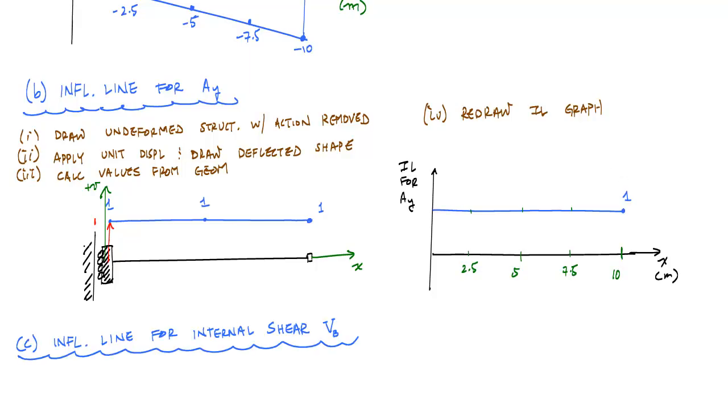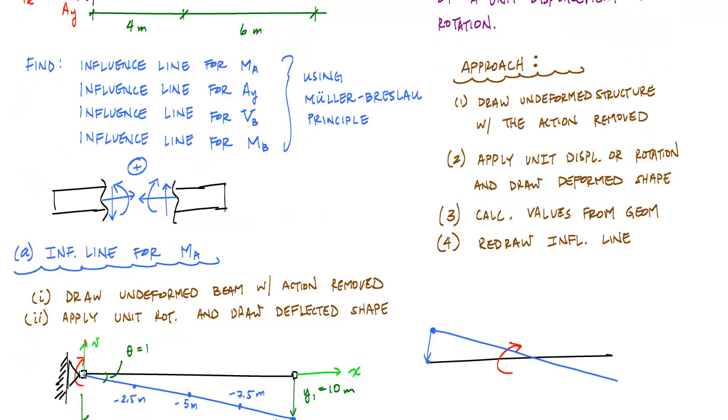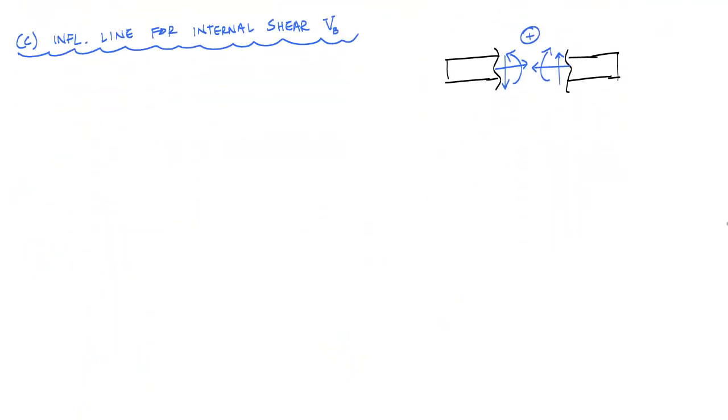So next, let's draw the influence line for the internal shear VB. And this is where this positive sign convention thing is going to come into play here. So I'm going to follow the same process as I did before. I'm going to remove the action and redraw the structure.